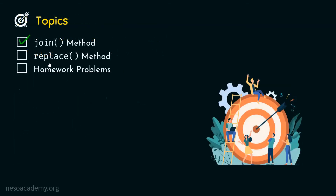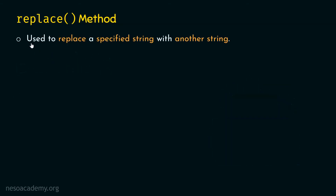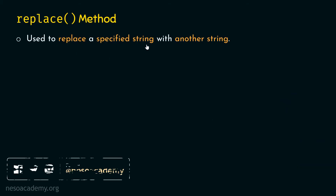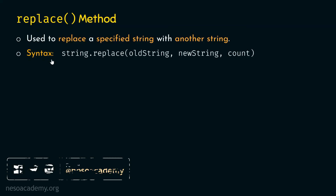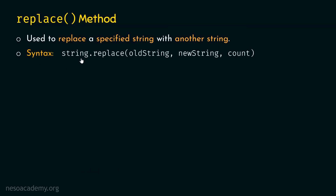After understanding join method, let's move on to replace method. Replace method is used to replace a specified string with another string. The syntax is simple: string dot replace with three arguments — old string, new string, and optionally count. Replace method replaces the old string with the new string.